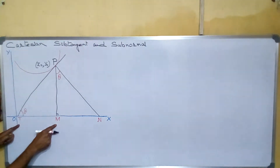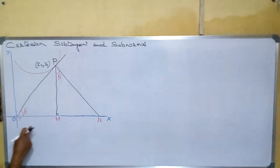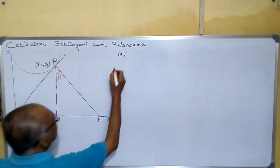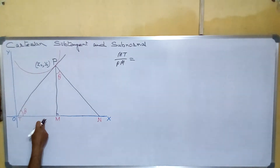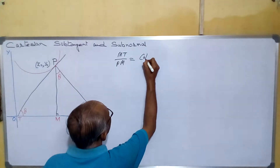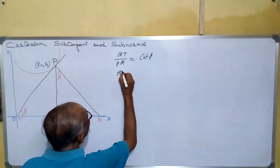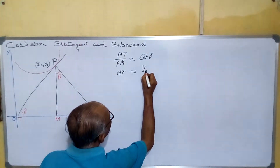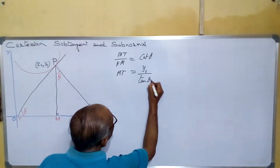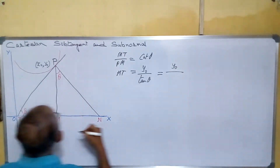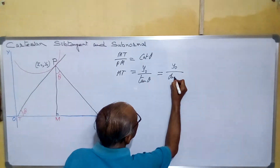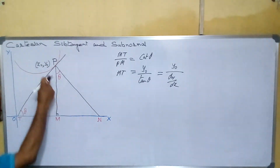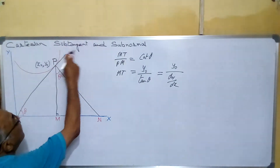Then MT is known as the length of sub-tangent. We can write MT/PM, and based on the right triangle, MT/PM equals cot θ. So MT equals PM·cot θ. Since PM equals y₀, we get MT = y₀·cot θ = y₀/(tan θ). Since tan θ equals dy/dx, sub-tangent equals y₀ divided by dy/dx, evaluated at that point. This is known as the Cartesian sub-tangent.